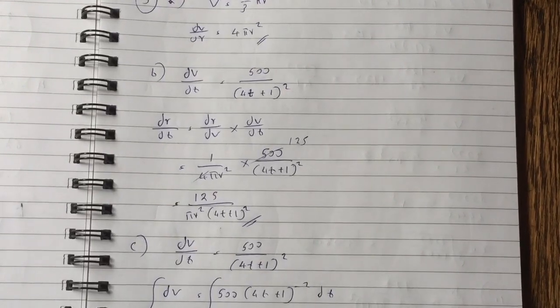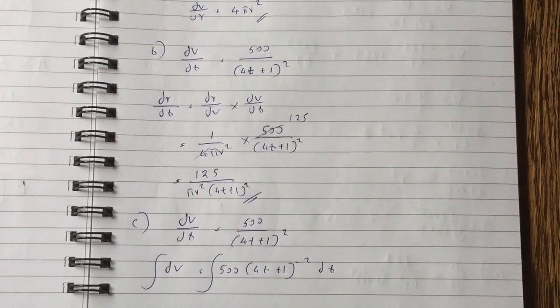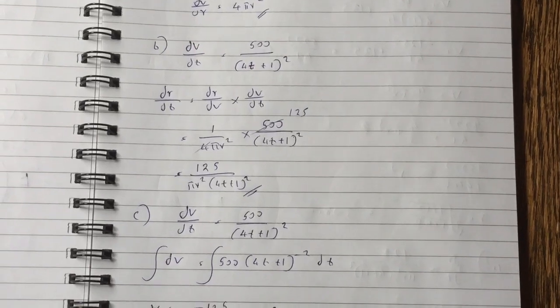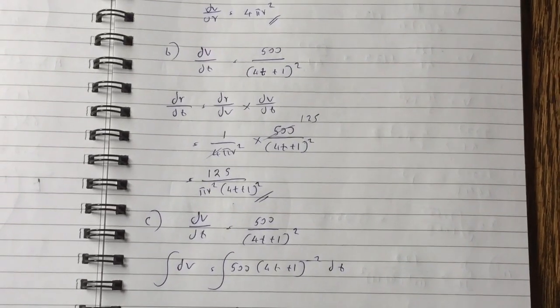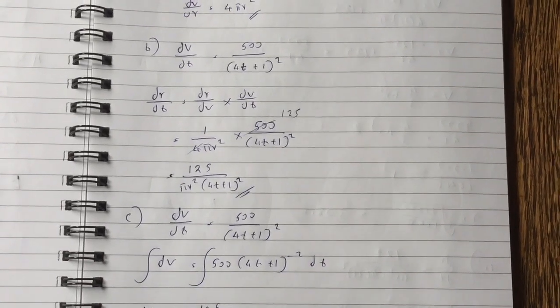So dr dt equals to dr dv times dv dt which is a chain rule. When you multiply it, you get 125 over pi r squared over, basically 125 over pi r squared, 4t plus 1 squared. So that's your dr dt.